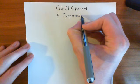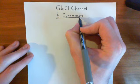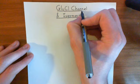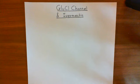Ivermectin is an anti-helminthic drug which kills parasitic worms, and it's used mainly in humans to treat onchocerciasis and also head lice and things like that.